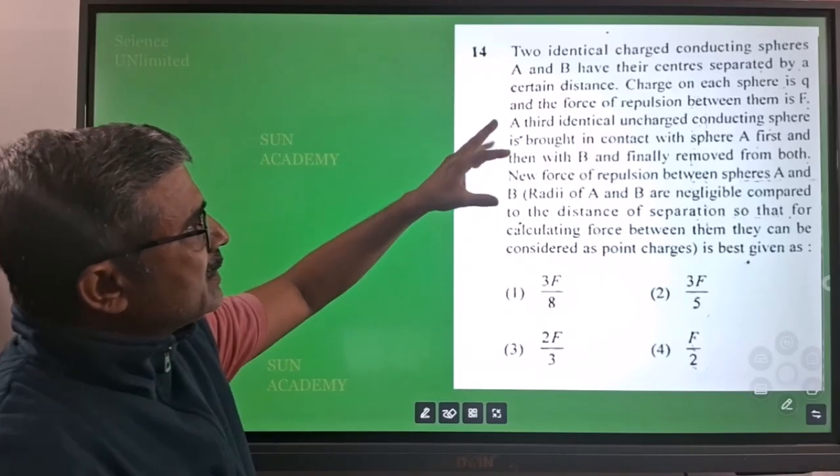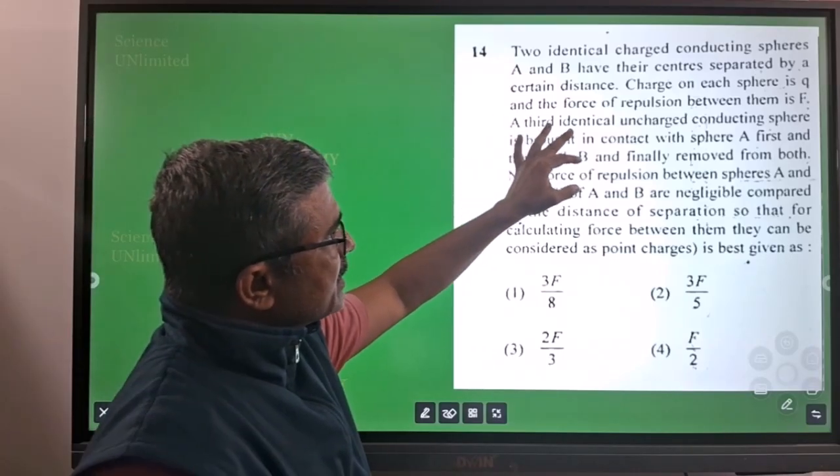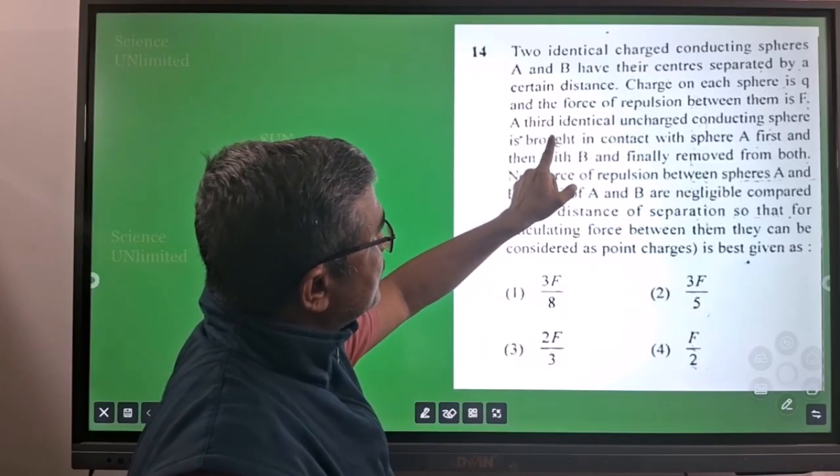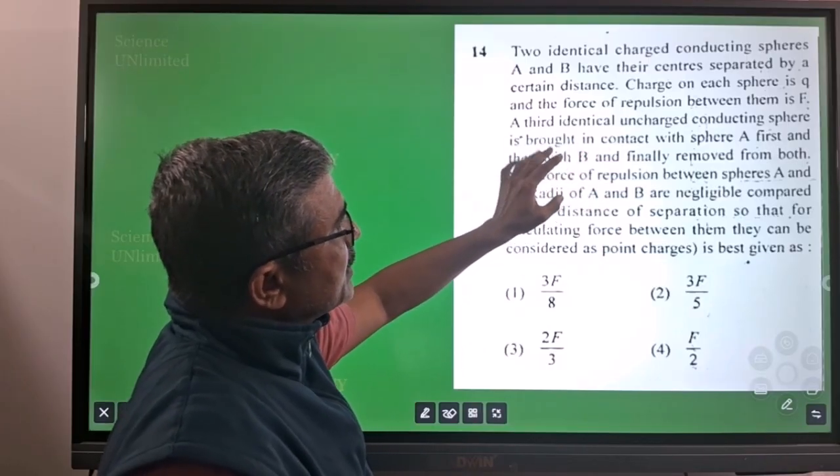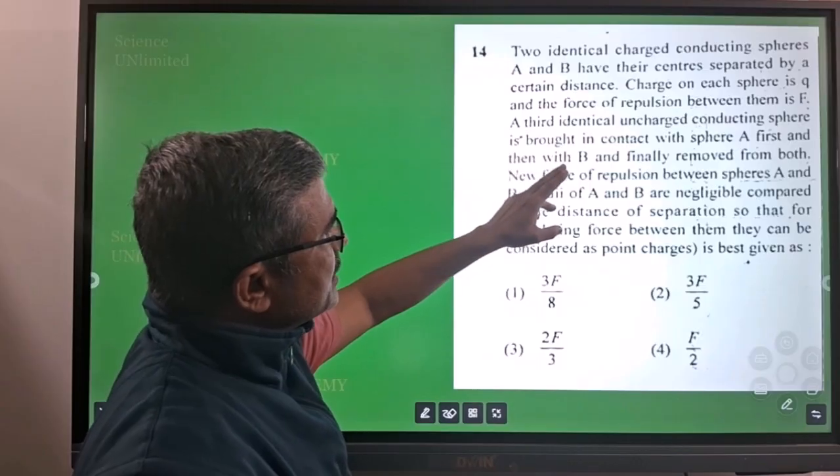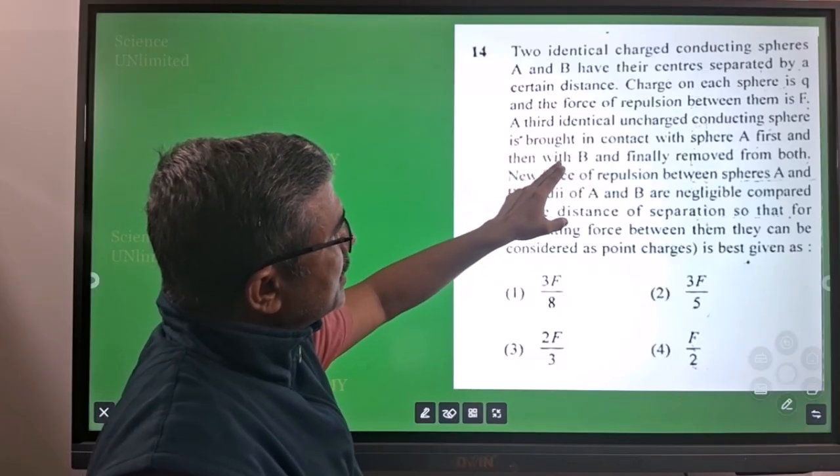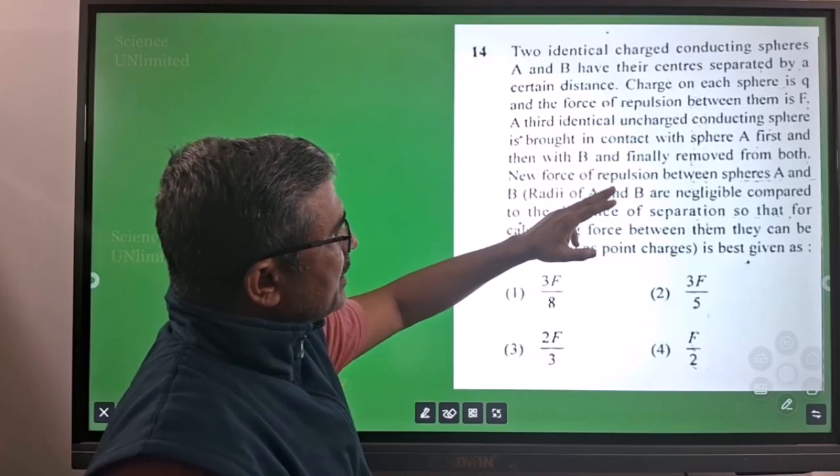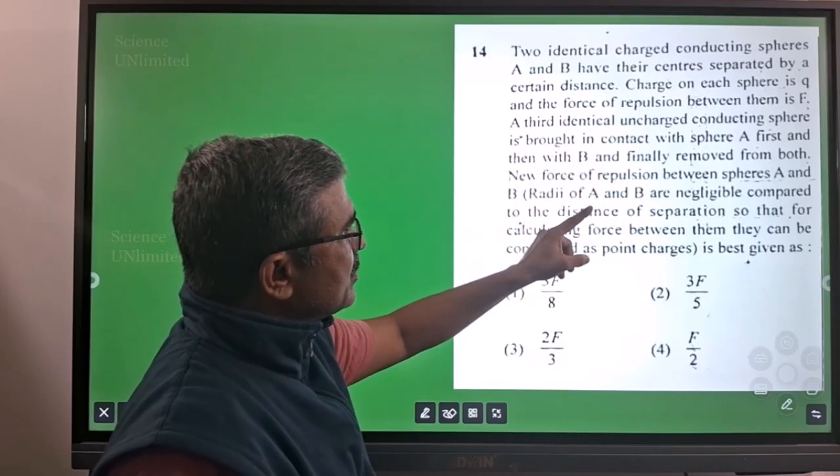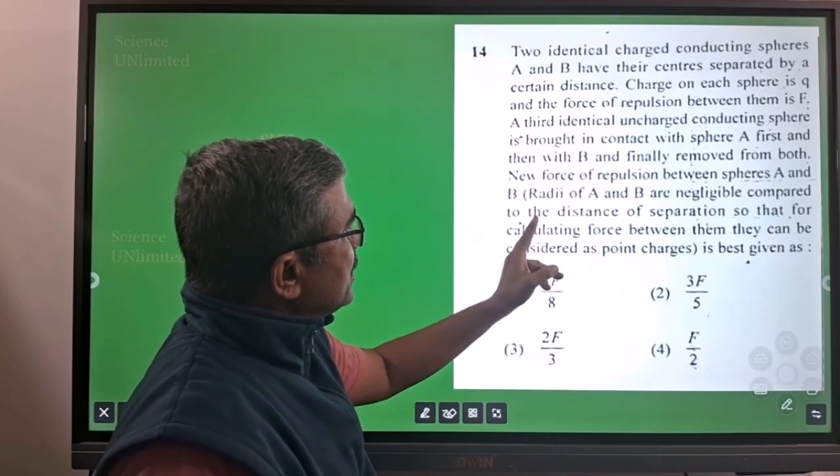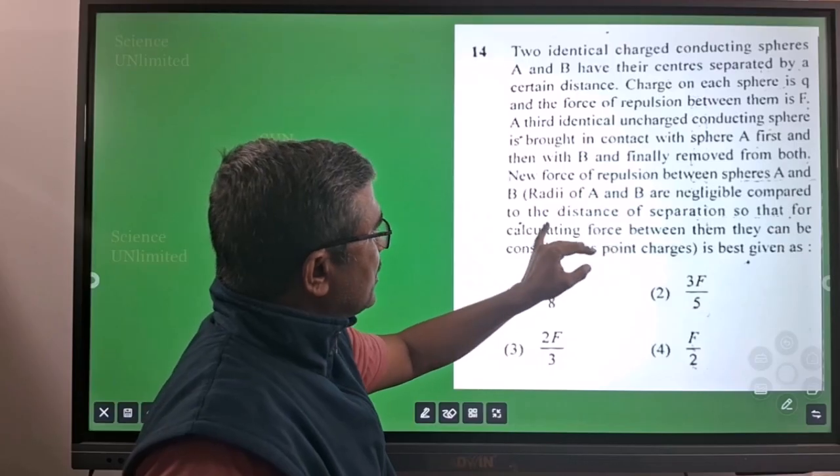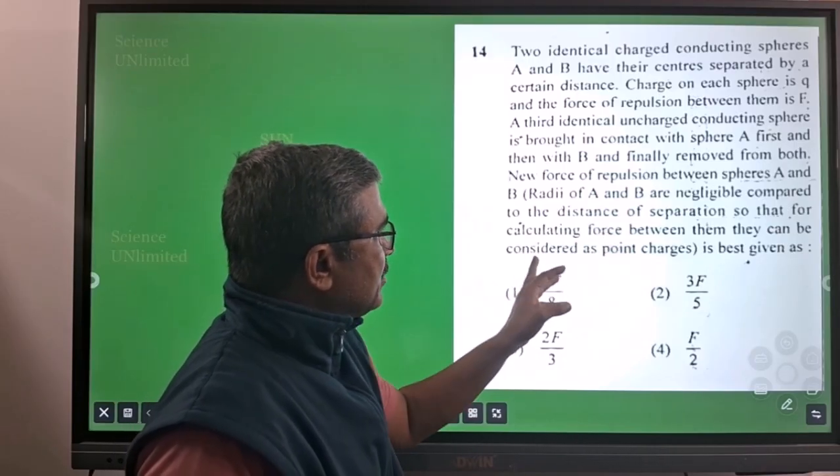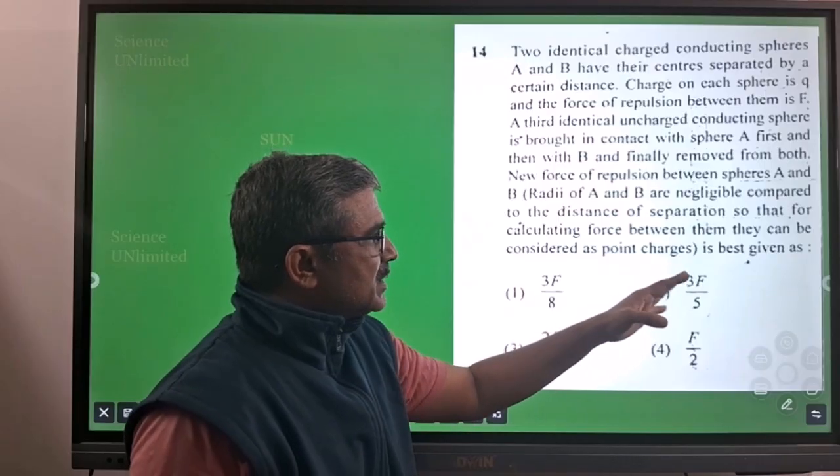Our next question is: two identical charged conducting spheres A and B have their centers separated by a certain distance. The charge on each sphere is Q, and the force of repulsion between them is F. If a third identical uncharged conducting sphere is brought in contact with sphere A first, then B, and finally removed from both, what is the new force of repulsion between spheres A and B? The radii of A and B are negligible compared to the distance of separation, so for calculating force between them they can be considered as point charges.